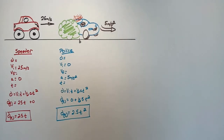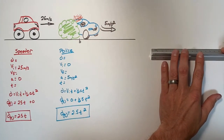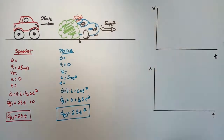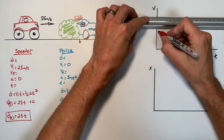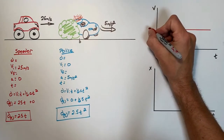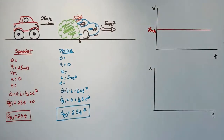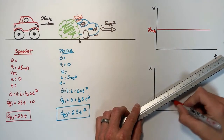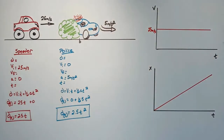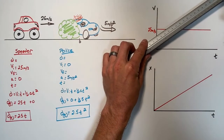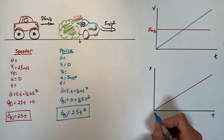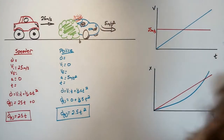To better understand what is happening in this problem, we're going to graph both the velocity versus time and position versus time for each vehicle. The speeding truck is traveling at 25 meters per second at all points in time, so we'll see a horizontal line at 25 m/s on the velocity graph, and a steady linear increase in position with a slope of 25. The police car is steadily accelerating at 5 meters per second squared, so we'll see a diagonal line on the velocity graph and a parabola on the position versus time graph.